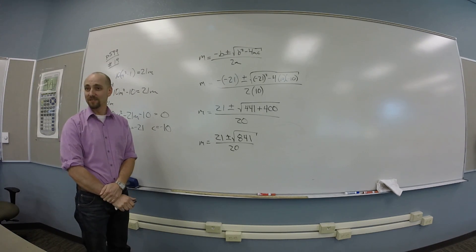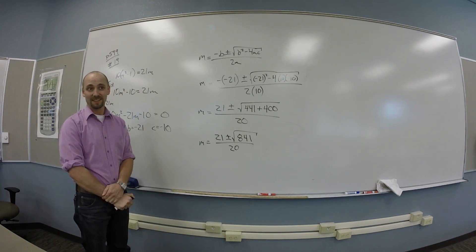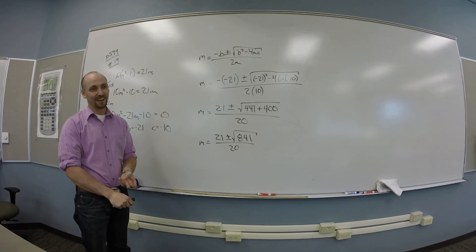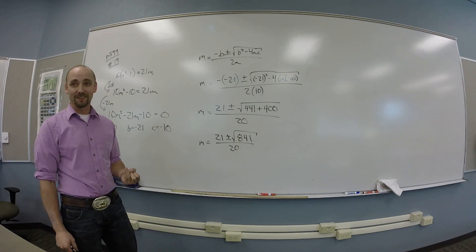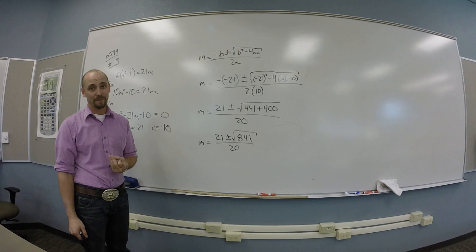Unfortunately, 841 isn't divisible by anything I recognize really quickly, right? Like 2 or 5. Those are really the 2 I recognize quickly. I could add the digits together, get 13, and realize that it's also not conveniently divisible by 3, right?